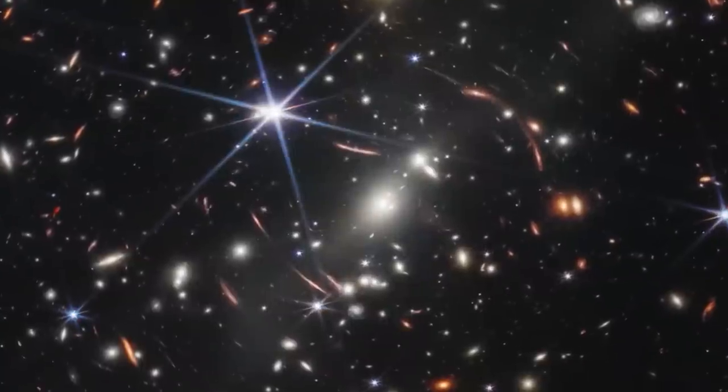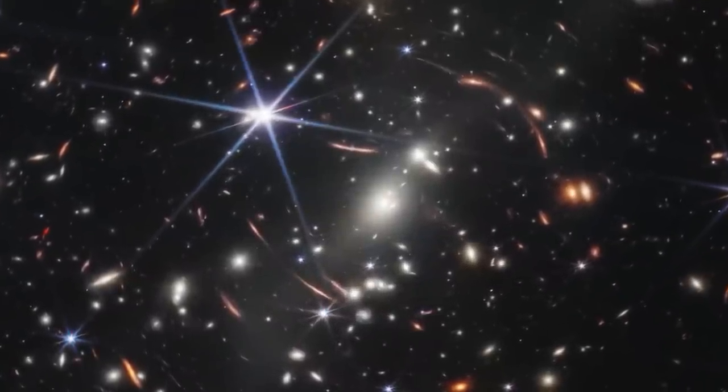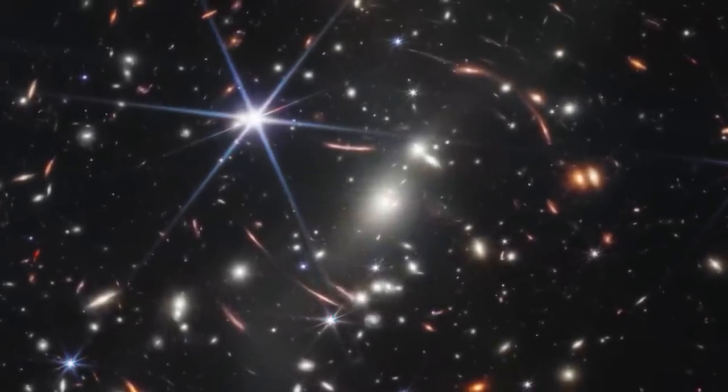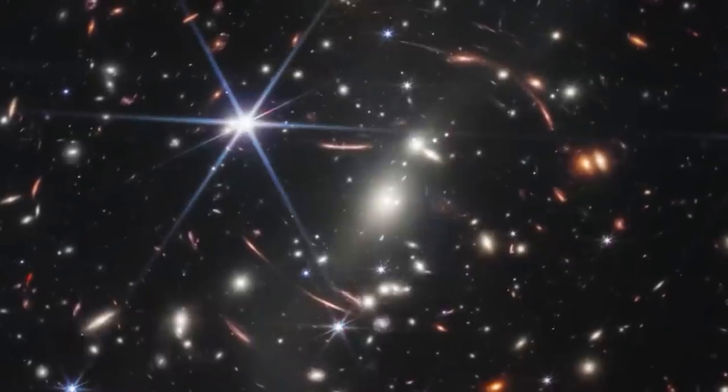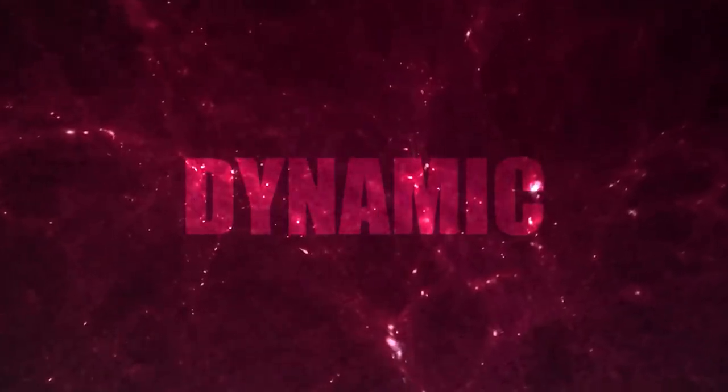Ancient galaxies, as observed by the James Webb Telescope, don't necessarily conform to the structures and shapes we're accustomed to seeing. In the universe's infancy, when galaxies were just beginning to take form, they exhibited traits that can be described as chaotic and dynamic.